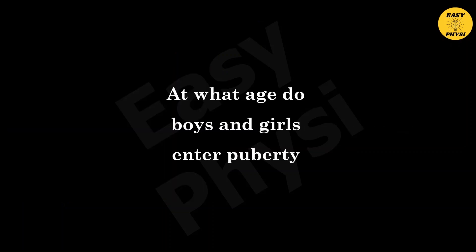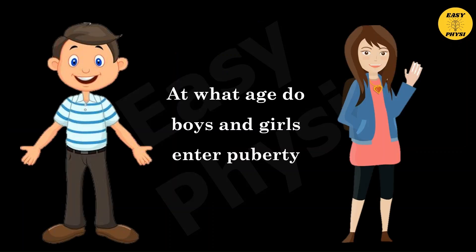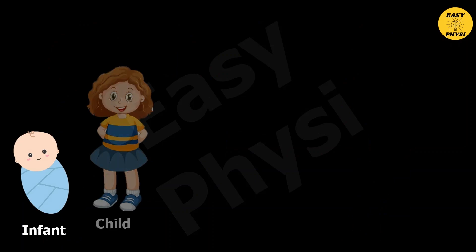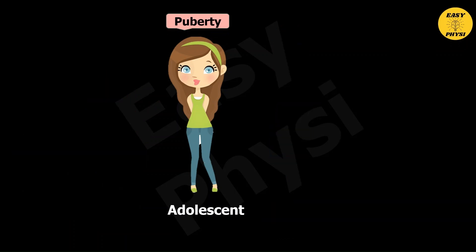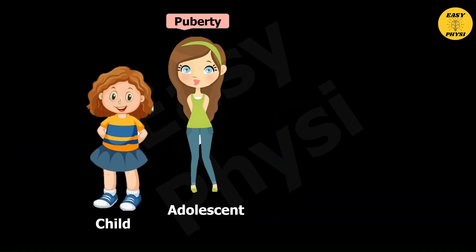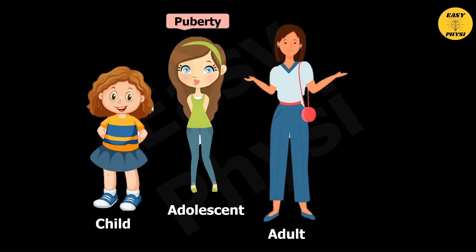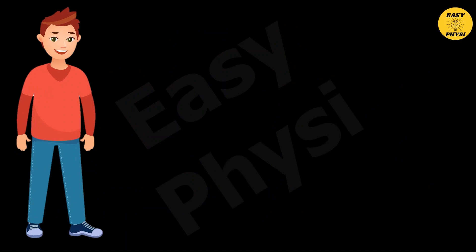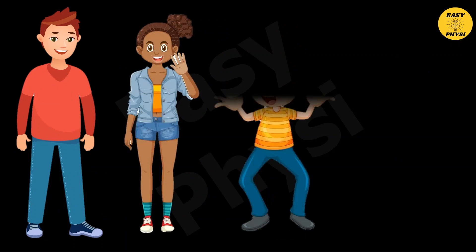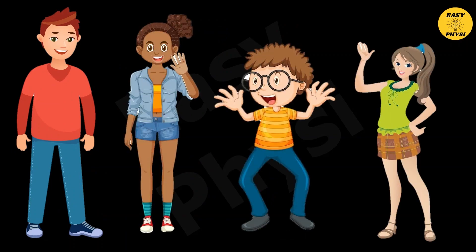At what age do boys and girls enter puberty? There is no specific age, but they enter into puberty during adolescence. Adolescence is the age between childhood and adulthood. How do we know that puberty has started in someone? We can notice the onset of puberty in boys and girls with some noticeable changes happening in their body.